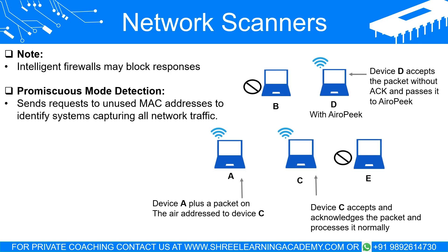Promiscuous mode detection is a slightly more sophisticated technique. It works by transmitting queries or request addresses to a Media Access Control — that is, MAC address — that is currently not in use on the network. A network interface card operating in normal mode will disregard this request, whereas NICs functioning in promiscuous mode will accept the query and send a response.